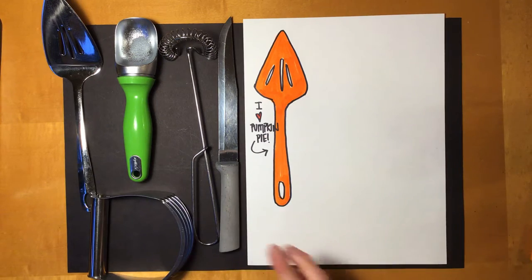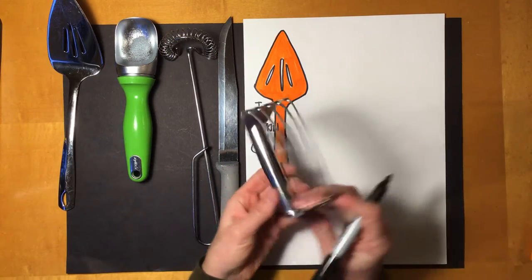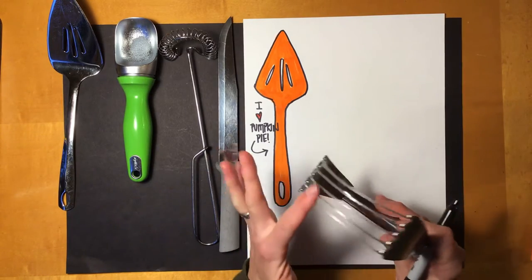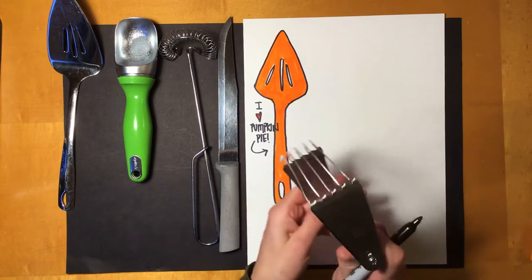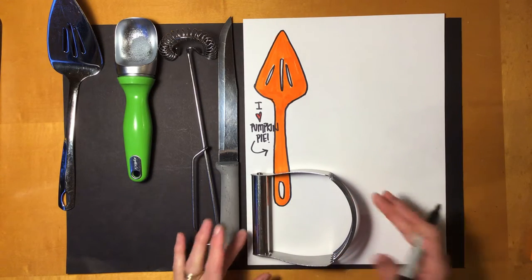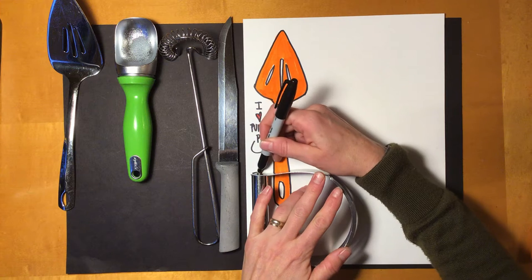So the next thing that I picked is this, and it's a pastry blender. So it chops up the Crisco with the flour and the salt and makes it nice and flaky, the crust. So I'm going to draw this, but I want to give you a tip.